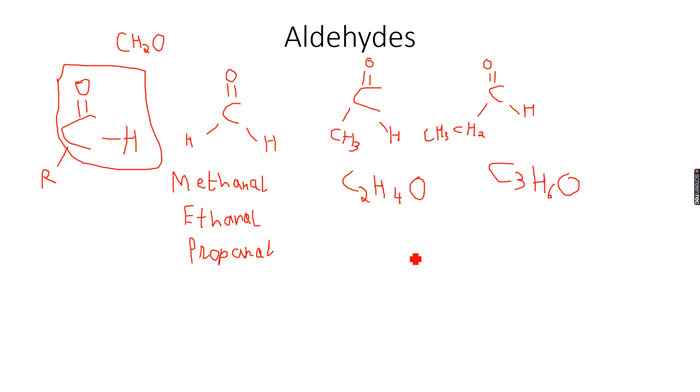The general formula for an aldehyde will be CnH2nO. The general formula, this is not only for an aldehyde, as we move further when we do ketones, you will see that this is the formula for ketones as well.